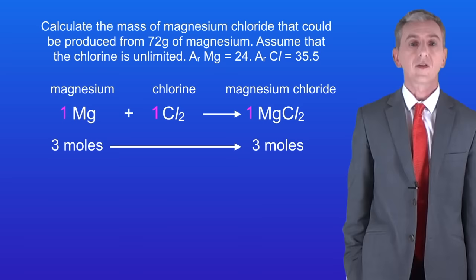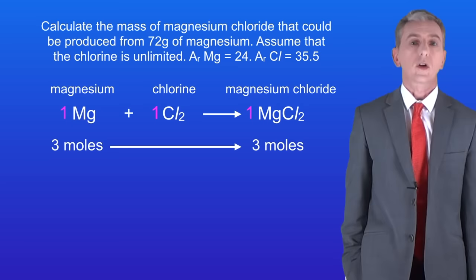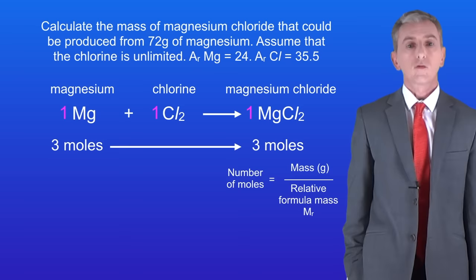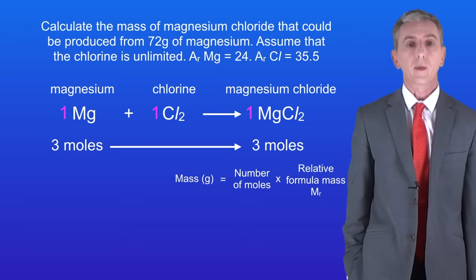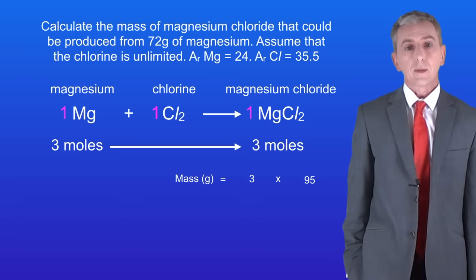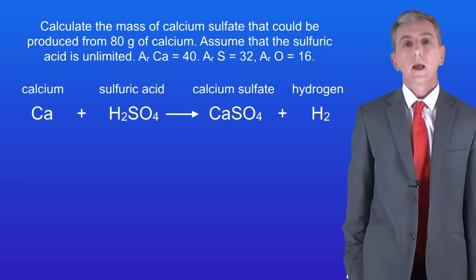We need to calculate the mass of magnesium chloride produced, so we go back to our equation. The number of moles equals the mass divided by the relative formula mass. We can rearrange this to work out the mass: the mass in grams equals the number of moles multiplied by the relative formula mass. The relative formula mass for magnesium chloride is 95. So 3 multiplied by 95 gives us a mass of 285 grams — and that's our final answer.